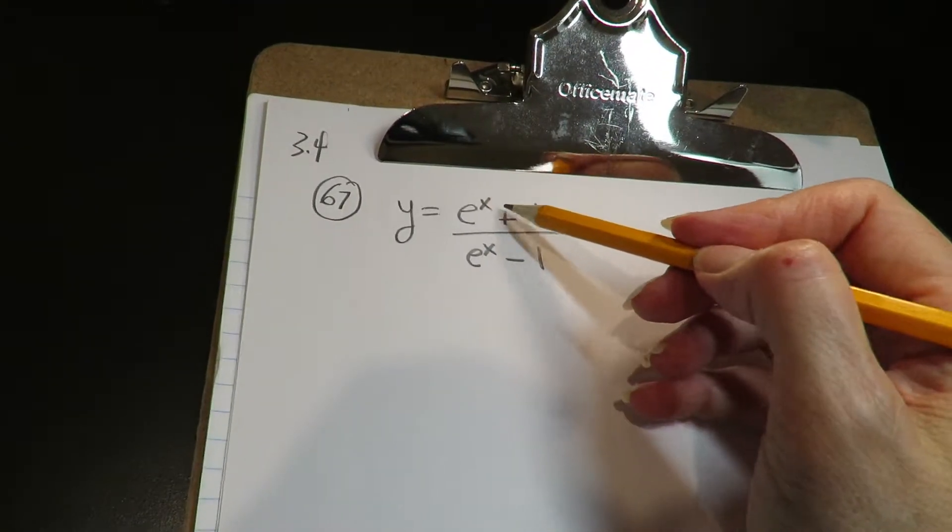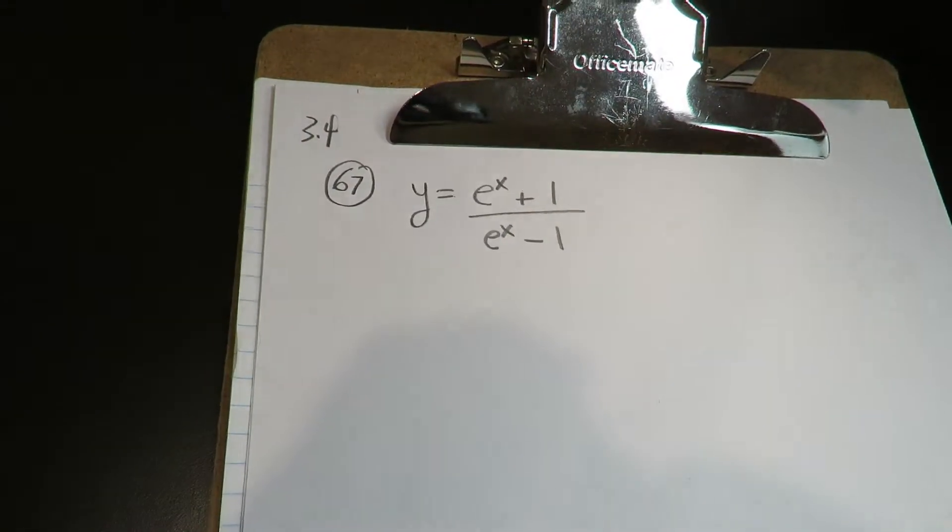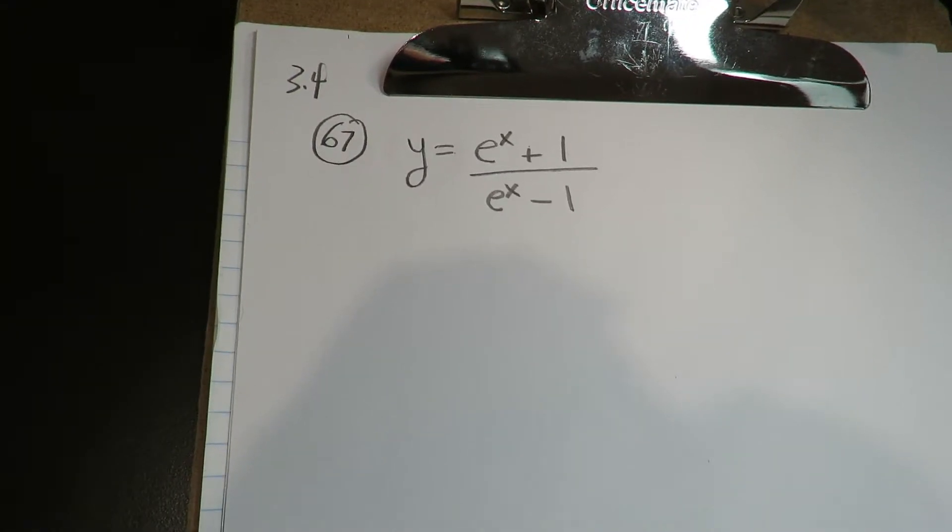Hi gang, since you have a variable divided by variable, this is going to be the quotient rule.